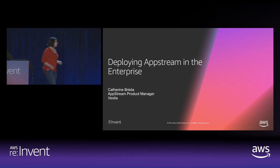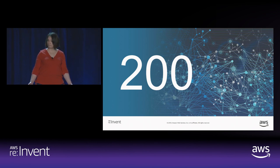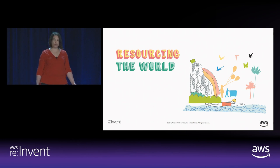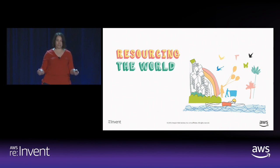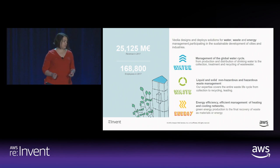Thank you. 200 applications are running on AppStream at Veolia today. That's a lot. What's the story behind that figure? Let's rewind a bit. Who is Veolia? Veolia is an international company born in France 165 years ago. We work in the environment and share the ambition of resourcing the world — contributing to improving access to resources, preserving them, and replenishing them. Today Veolia represents more than 25 billion in revenue and we are almost 170,000 employees in more than 50 countries.